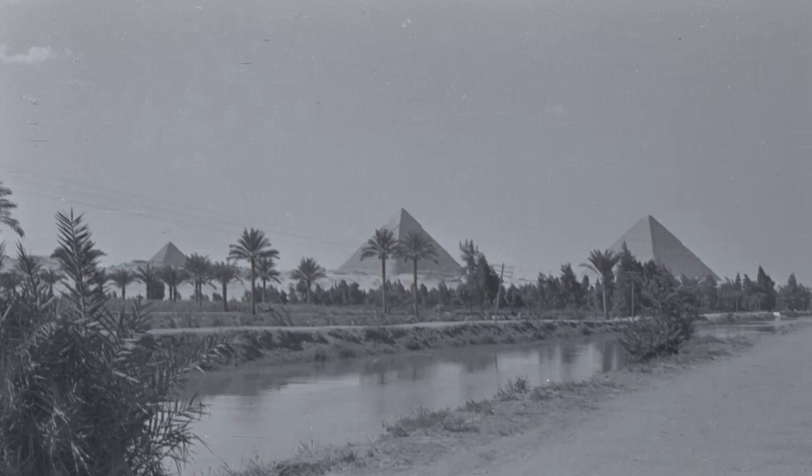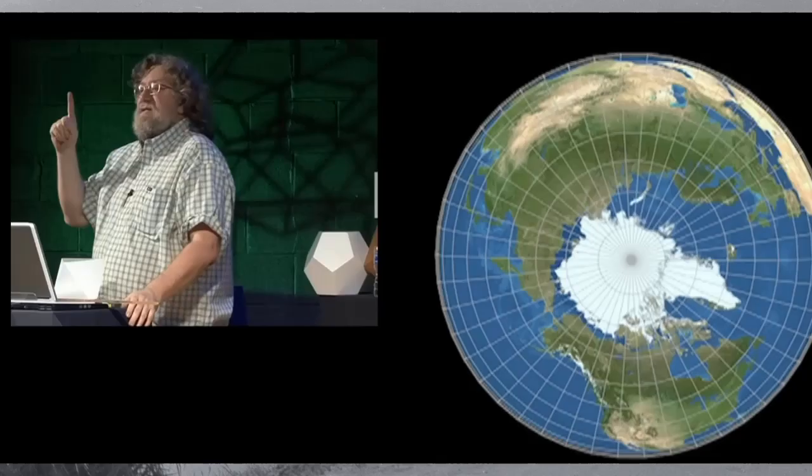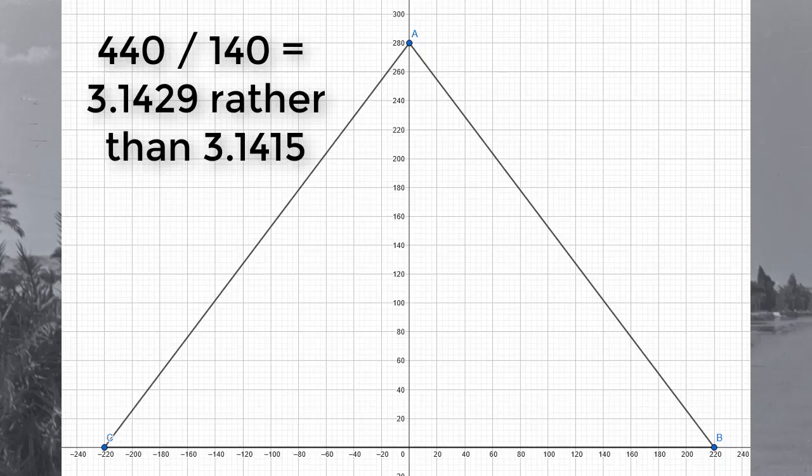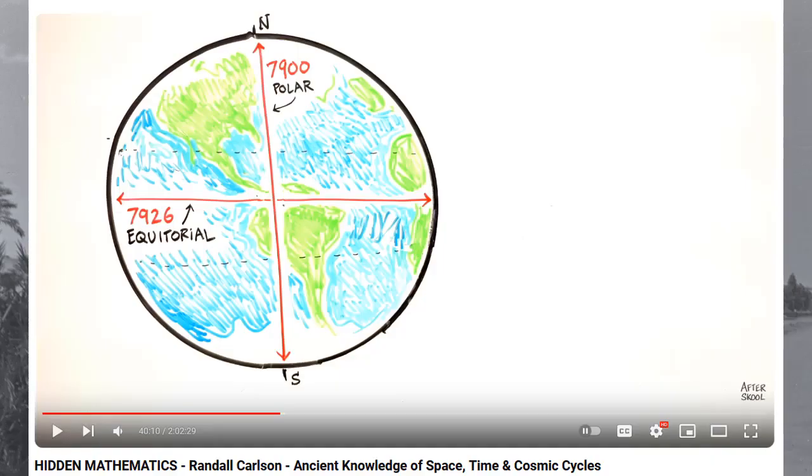In any case, now that we understand the relationship the pyramid has with a sphere, let's look at Randall Carlson's theory. The theory is simple: What if the specific sphere the pyramid was supposed to be in harmony with was the Earth itself? Hypothetically, this could explain the slight variation of pi in the pyramid, implying that it was meant to fit an ovaloid slightly off from a perfect sphere, such as the Earth, which is slightly wider than it is tall, because it is the case that the perimeter of the base of the pyramid is ever so slightly wider than the perimeter of a circle with a radius equal to its height.